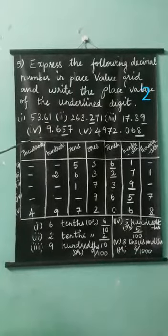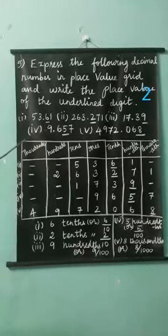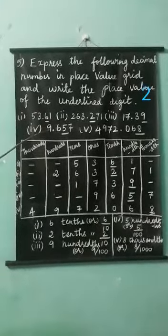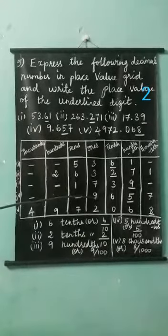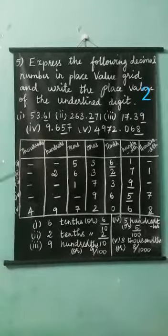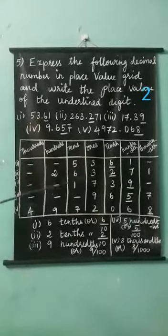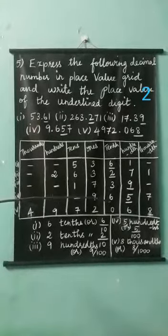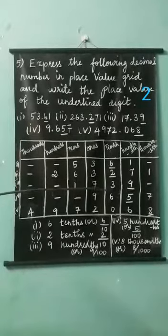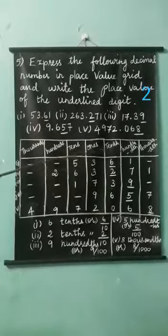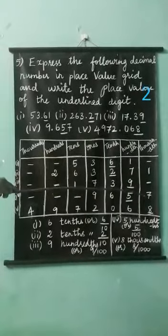See the fourth number: 9.657. Here, one number is here, so write the nine in one's place — nine. Next, the decimal point numbers: six in tenth place, five in hundredth place, seven in thousandth place.